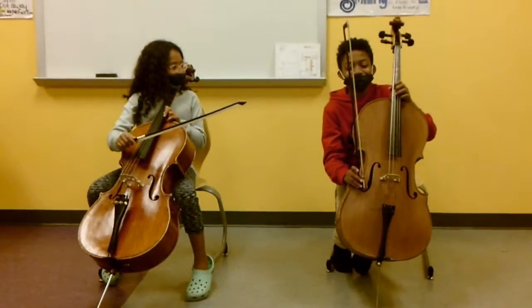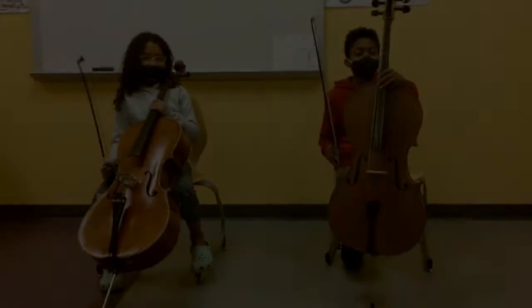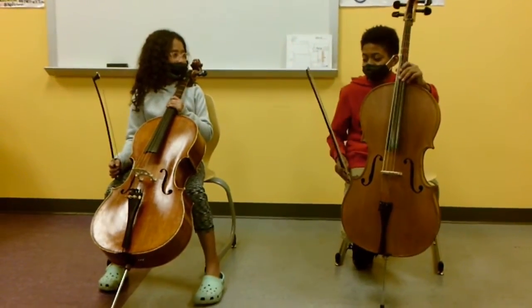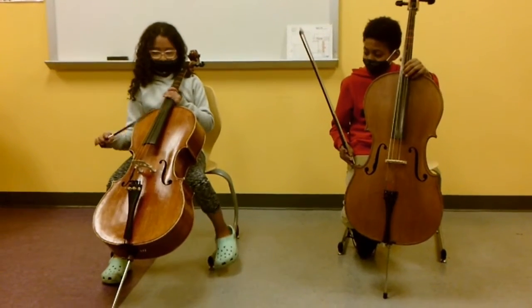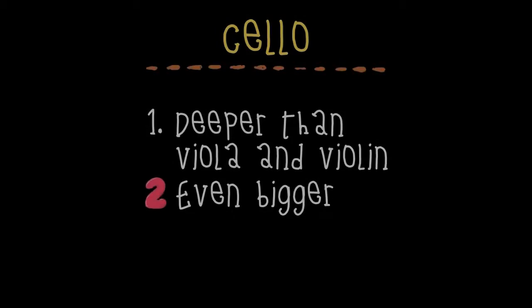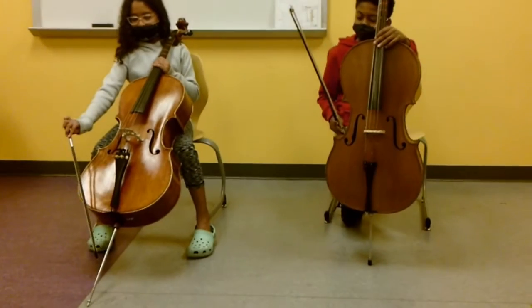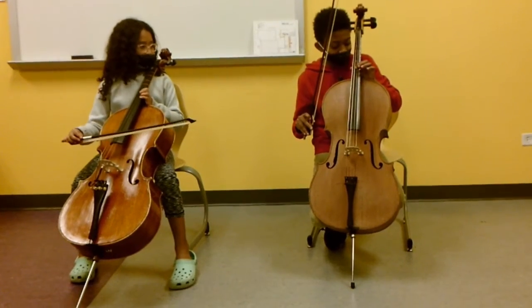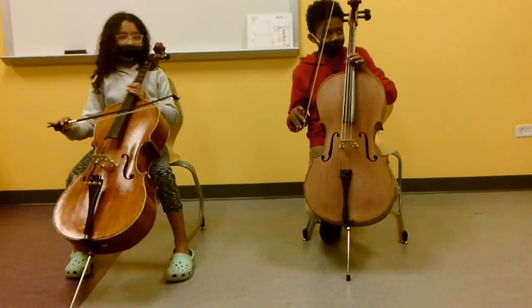Hello, we are the cellos. Today we will be showing our strings and everything. The cello is deeper than the violas and the violins. The cello is so big that we have to put it on the floor. The end pin is for the cello to stand up on the floor. The strings — we have A, D, G, and C.